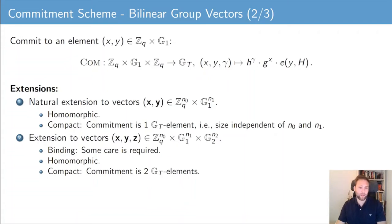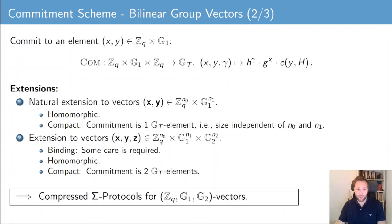Moreover, this commitment scheme can also be extended to allow a prover to commit to vectors that contain coefficients not only in Zq and G1 but also in G2. We have to be a little bit careful to preserve the binding property. The commitment scheme is still compact; however, a commitment will be two Gt elements instead of one. The homomorphic property is automatically preserved. This generalized commitment scheme already gives you compressed sigma protocols for proving linear relations about committed vectors with coefficients in Zq, G1, and G2. However, we have not yet shown how to handle Gt coefficients or how to handle non-linear relations.